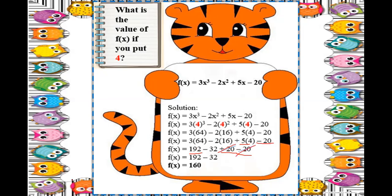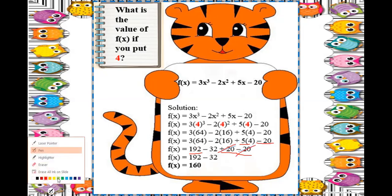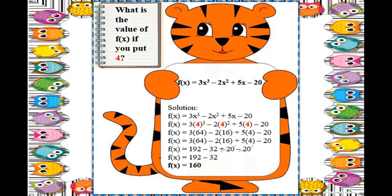They cancel out, leaving 192 minus 32. That is 160 — positive, because 192 is greater than 32. So the final answer is 160. Don't forget to also substitute the value of x in the f of x notation.